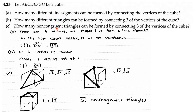Part C: How many non-congruent triangles can be formed by connecting 3 of the vertices? The first type connects three vertices where all 3 side lengths are √2, √2, and √2. The second type has side lengths 1, √2, and √3. The last type connects 3 points on one face, with side lengths 1, 1, and √2. These are the only ways to connect 3 points to get non-congruent triangles, so there are 3.